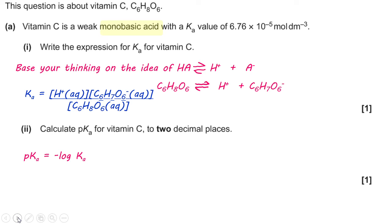So, pKa has a relationship to Ka in the same way that pH has a relationship to H plus. So, it's the same mathematical connection. We do pKa equals minus log of the Ka value that we've been given at the top of the page.